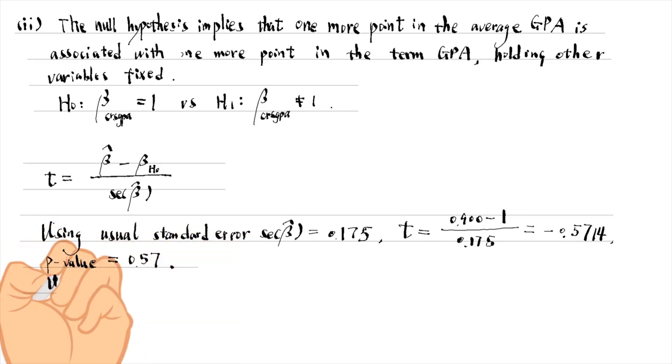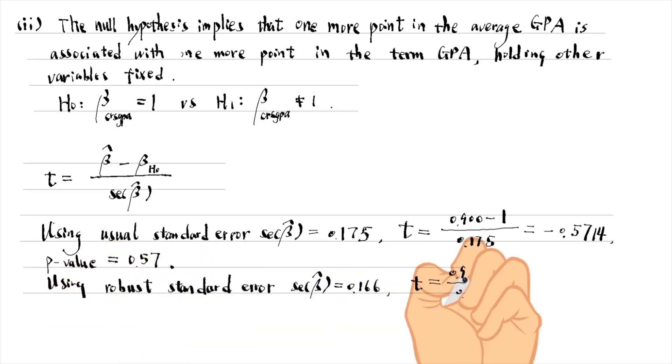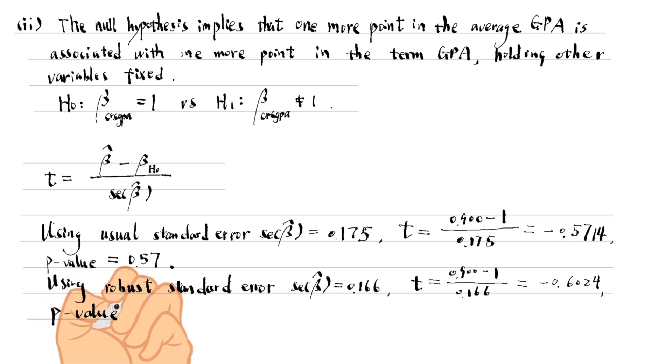If we use the heteroscedasticity robust standard error to compute the t-statistic, it equals minus 0.6, and its p-value is 0.55. We could not reject the null hypothesis in both cases at the 5% level.